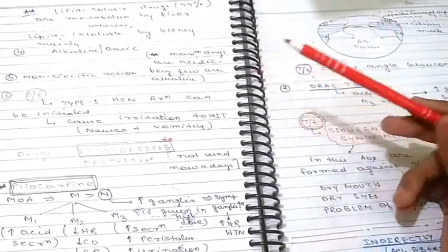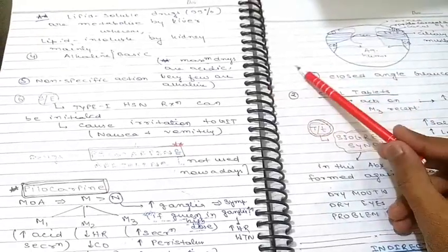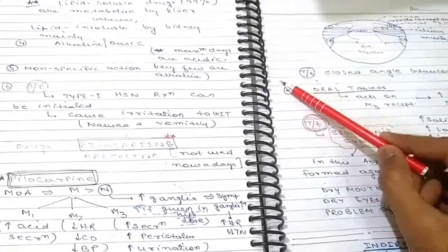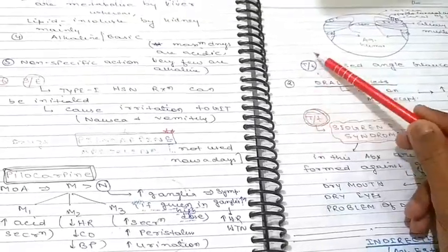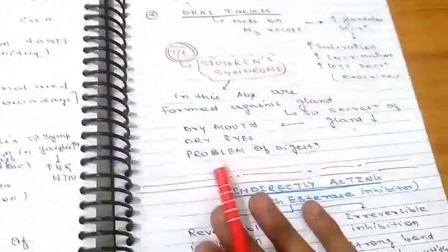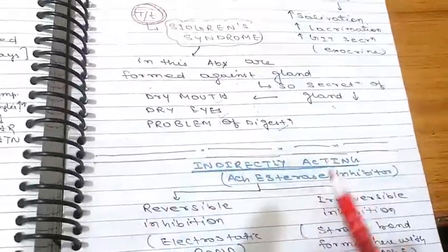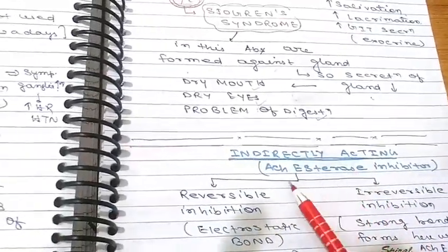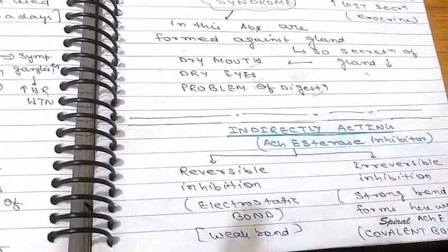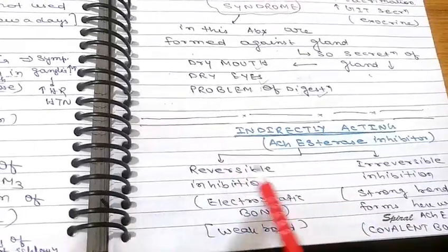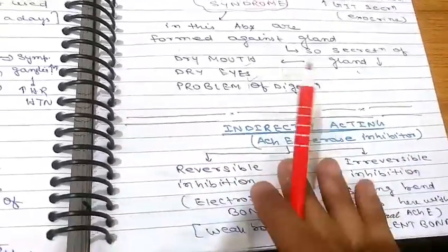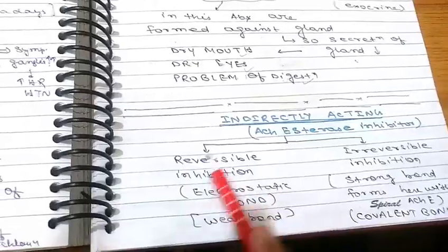This concludes directly acting cholinergic drugs, which directly act on receptors. We discussed two categories: esters — acetylcholine, methacholine, carbachol, bethanechol — and alkaloids — mainly pilocarpine. Now we will move to indirectly acting drugs, which generally inhibit acetylcholinesterase. They are acetylcholinesterase inhibitors and are again divided into two groups: reversible inhibition and irreversible inhibition.